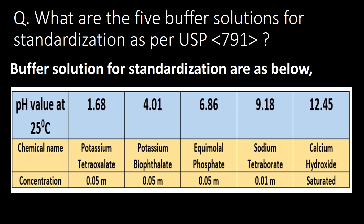What are the five buffer solutions for standardization? As per USP chapter 791, you can refer to the table below for buffer solutions used for standardization. The table provides pH values at 25 degrees Celsius, chemical names, and concentrations. The five buffer solution pH values at 25 degrees Celsius are: 1.68, 4.01, 6.86, 9.18, and 12.45.